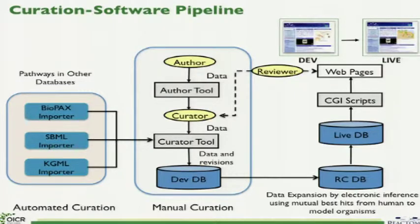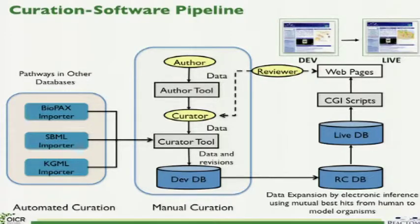This slide shows an overview of our curation software pipeline. On the left, we have an ability to import pathway information from a variety of other sources using open data standards and closed datasets. This data flows into the curator tool. Expert authors use an author tool, and that data flows to the curator tool, which then feeds into the development database.